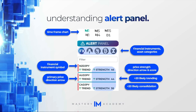Understanding the alert panel: it includes the time frame charts, including M1, M5, M15, and many others. Under this section, it includes the financial instrument asset categories — forex currency pairs, commodities, oil, cryptocurrencies, and indices.